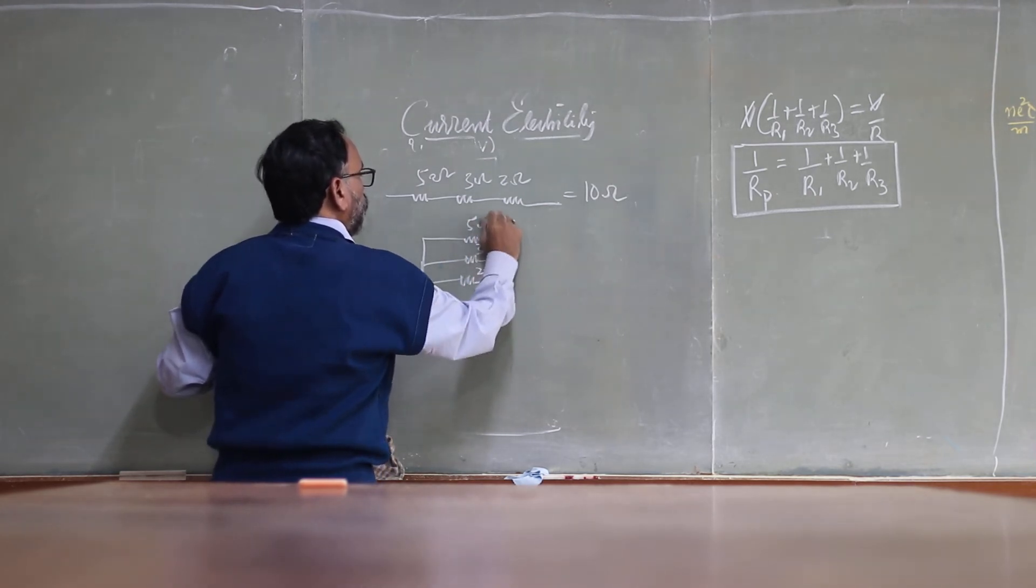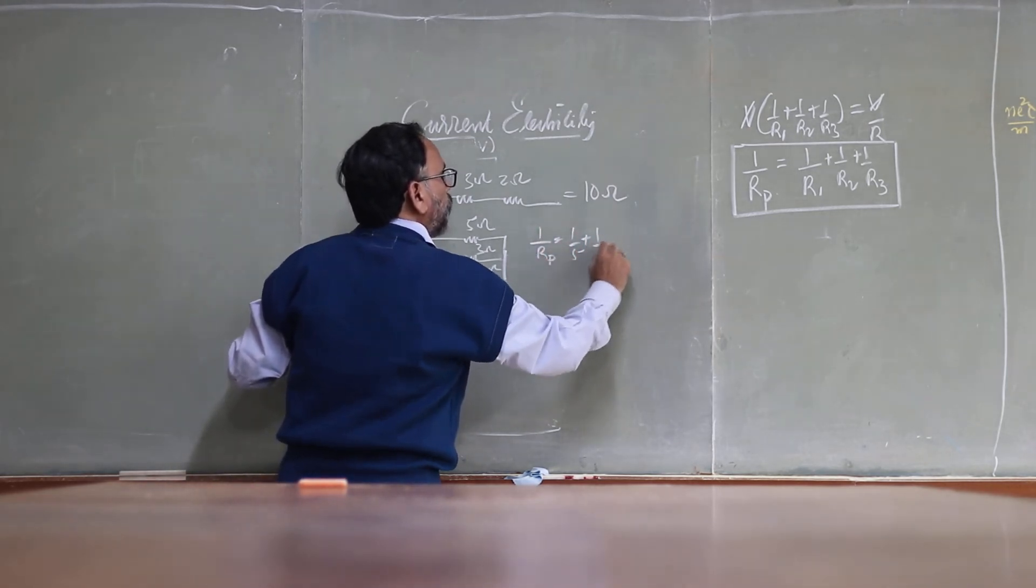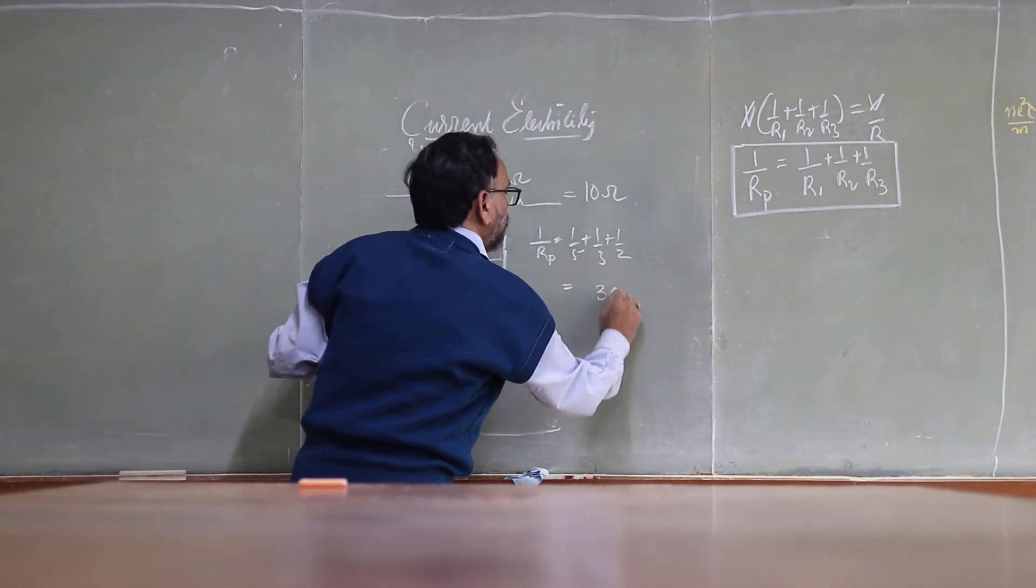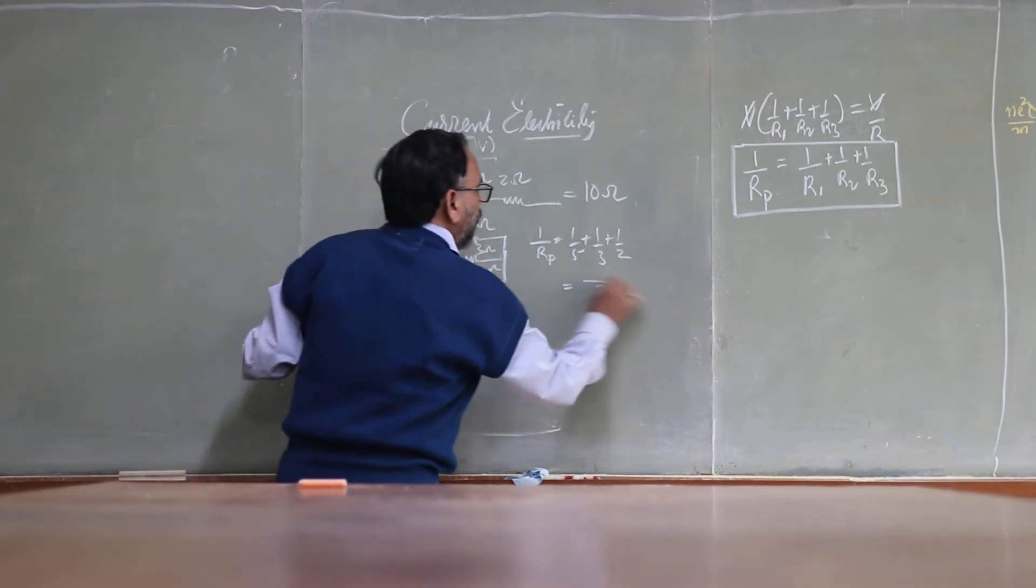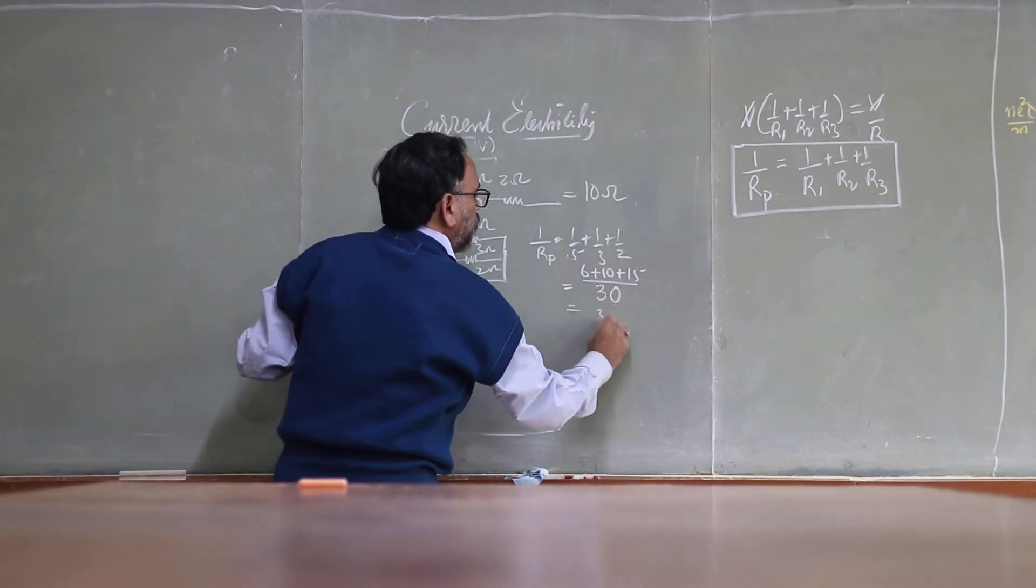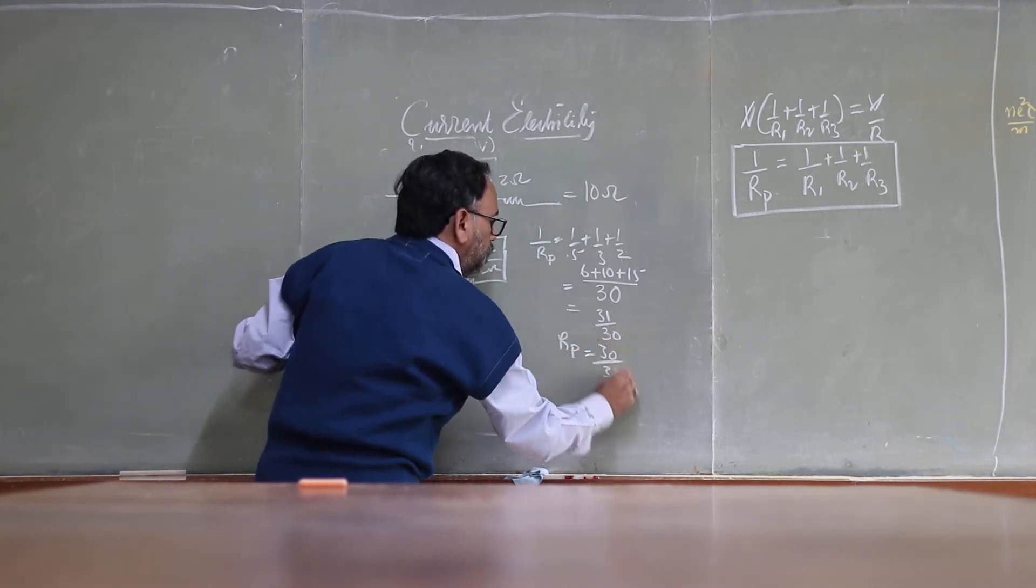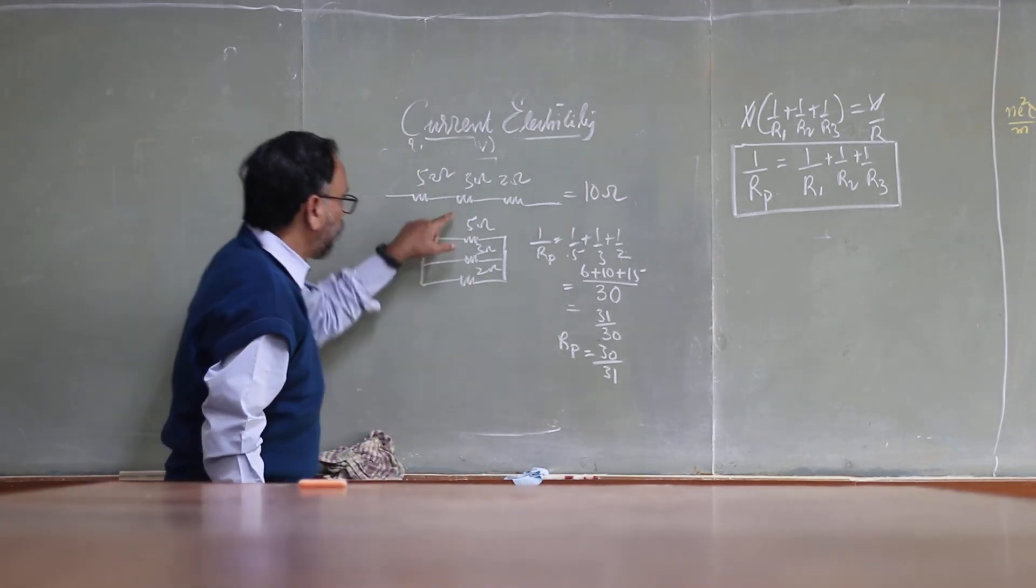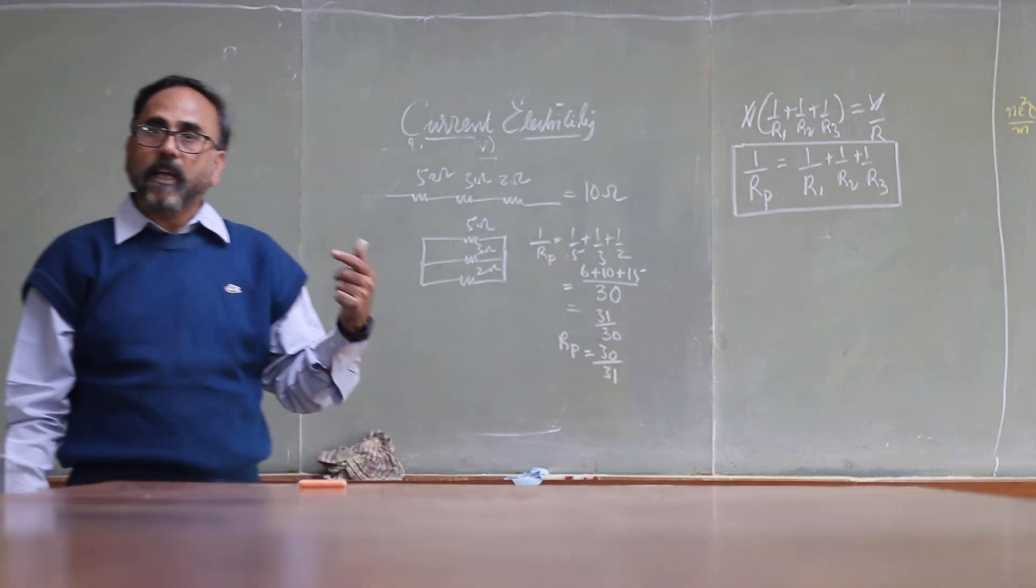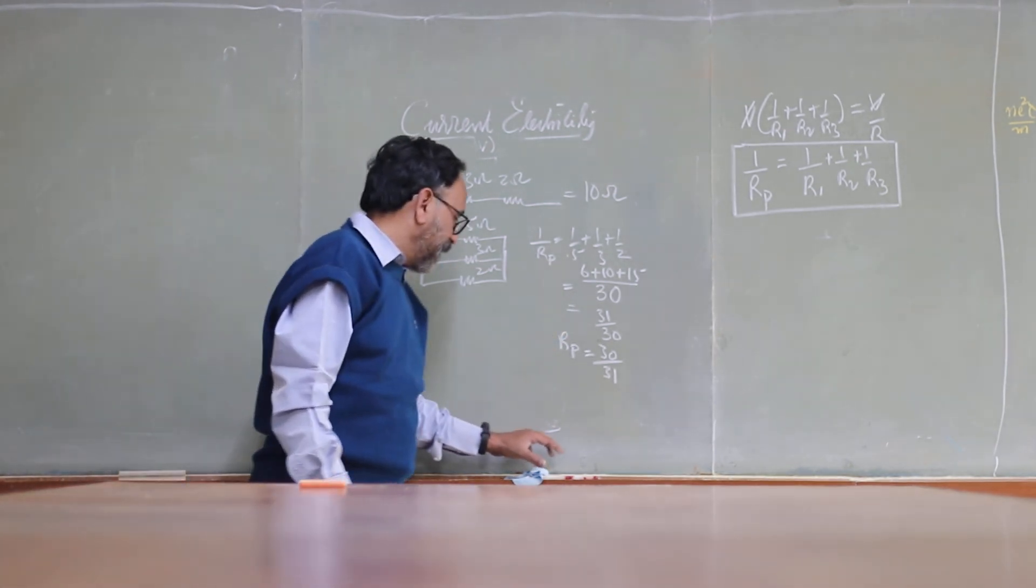For 5, 3, 2 ohms, then 1 by Rp is equal to 1 by 5 plus 1 by 3 plus 1 by 2. The LCM is 30. Then 6 plus 10 plus 15, so it is going to be 31 by 30. Therefore R in parallel is 30 by 31, which is less than 1, which is less than 5, less than 3, and less than 2. So in parallel we always get the resultant resistance which is less than that of individual resistors. And in series it is more than individual resistors.